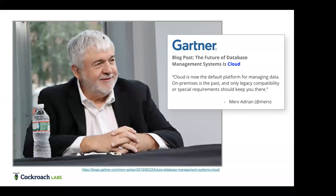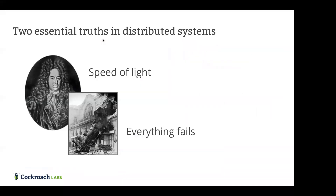When you move to the cloud and start using containers and distributed systems, it's difficult — it is a new paradigm. I would argue that in any distributed system, especially around data, there are two essential truths that need to be combated when thinking about a database in the cloud. Number one is the speed of light. There are going to be latencies as you have applications accessing data from different parts of the planet.